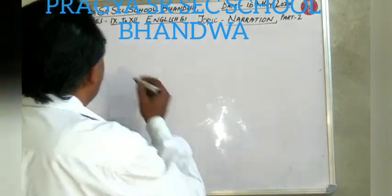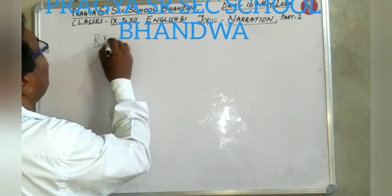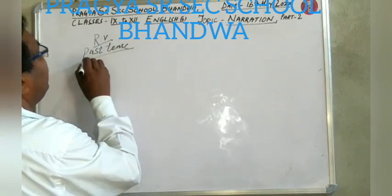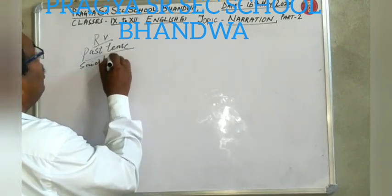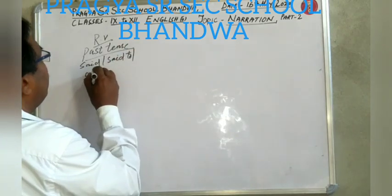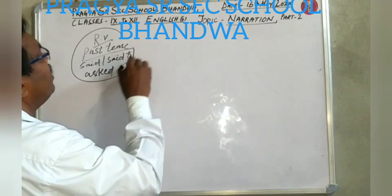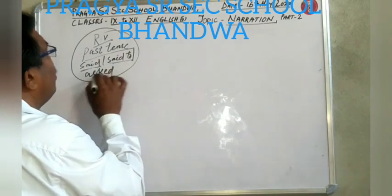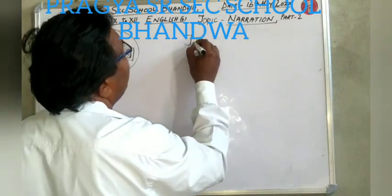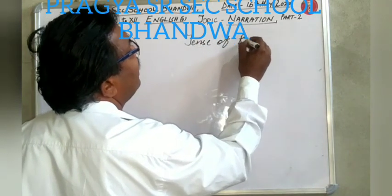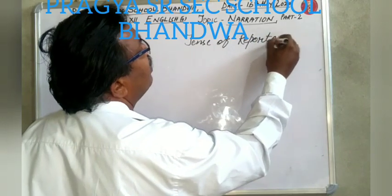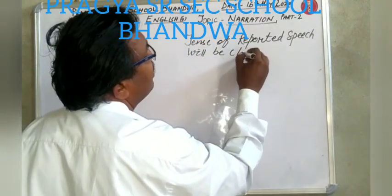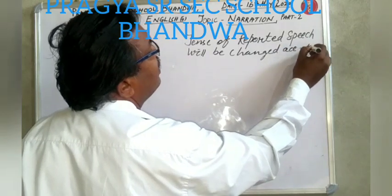Today our point is: when the reporting verb is in past tense — past tense means 'said', or 'said to', or 'asked', etc. — then the tense of the reported speech will be changed according to tense.